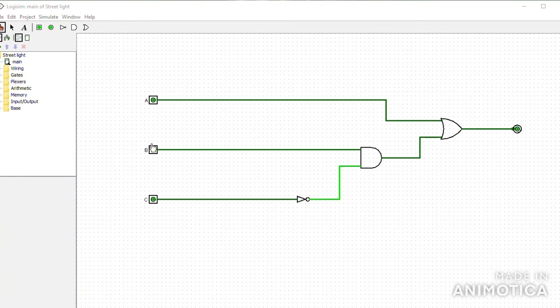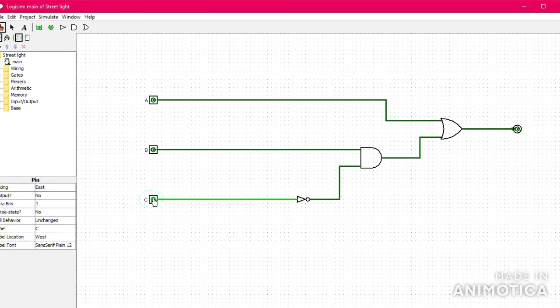When all inputs A, B, C are equal to zero, then the output will be equal to zero. When A and B are equal to zero but C equals one, the output will be zero too. When A is equal to zero but B is equal to one, the output will be one.